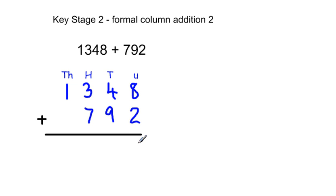We then start with our least significant digits, which are units, and do 8 plus 2, which equals 10. We have to carry our 10, so we write our 1 above the tens column. We now do 9 add 1 add 4, which equals 14.